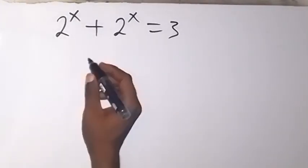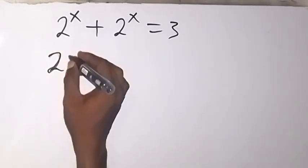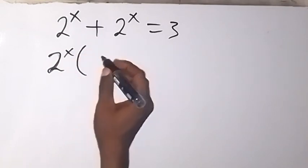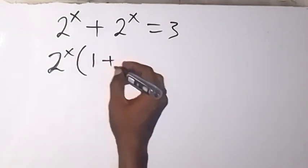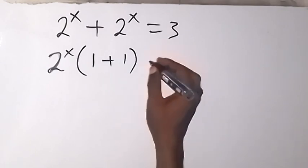From here, let's factorize and say 2 raised to power x out. So we are going to have 1 plus 1 left in this bracket here, which is equal to 3.